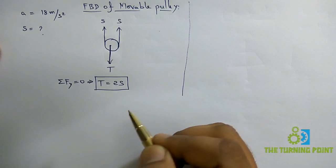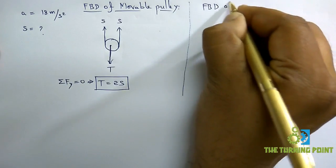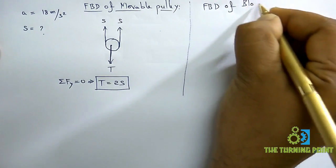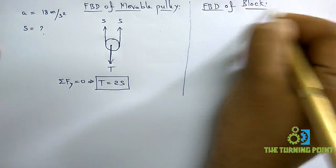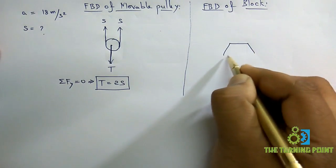Now let us consider the free body diagram of the block. When we consider free body diagram of the block, remove all the contact surfaces and draw the block separately.